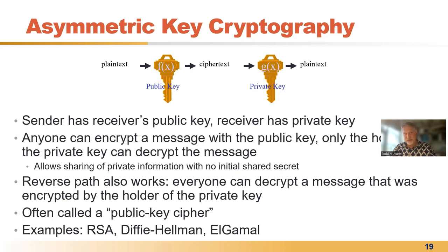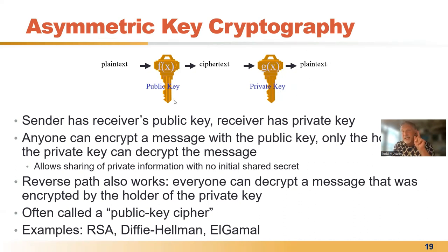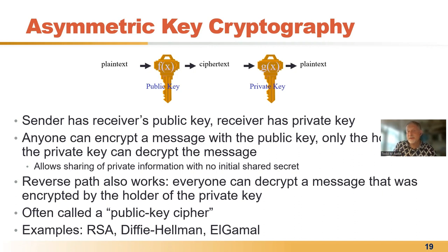Now we have a way to share information with someone without knowing anything in advance — just their well-known public key. The reverse also works, and we'll use this to implement signatures: you can take plain text, encrypt it with the private key, and it can only be decrypted by the public key. We use this for authentication. Examples of public key ciphers are RSA, Diffie-Hellman, and El-Gamal. Asymmetric key cryptography is built on classic one-way functions — functions that are easy to compute in one direction and really hard to compute in reverse. RSA, for example, is built on the fact that multiplying factors to get their product is easy, but factorizing a product into its original factors is a classically hard problem studied for over 2,000 years.